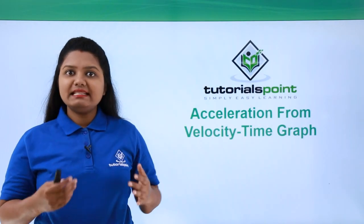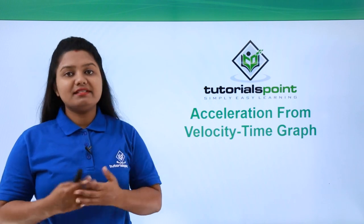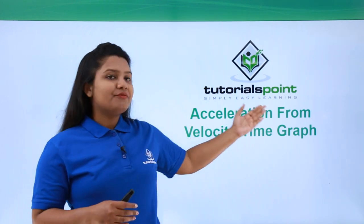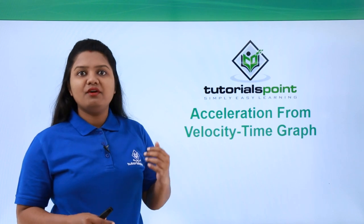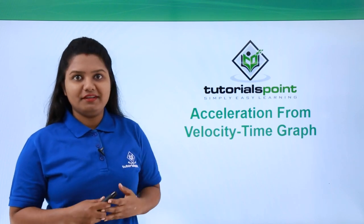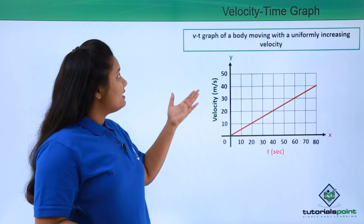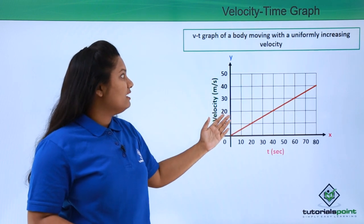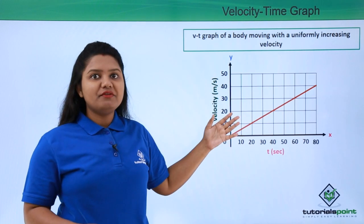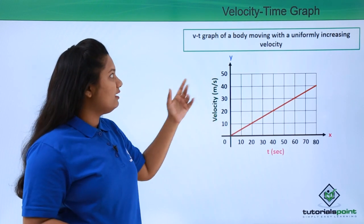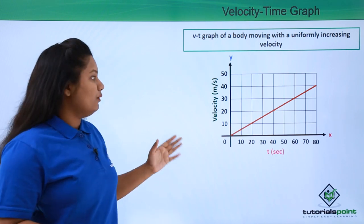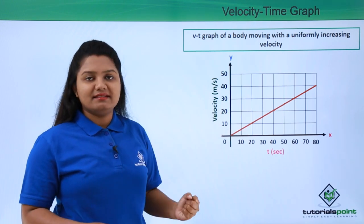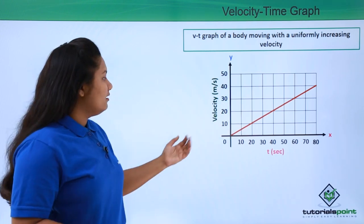Hello everyone. In this video we'll be discussing how to find acceleration from the velocity time graph of a moving body. So let's say we have the velocity time graph of a body which is moving with a uniformly increasing velocity, and we know it is a straight line inclined to the x-axis.